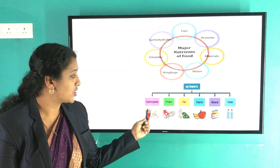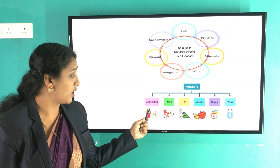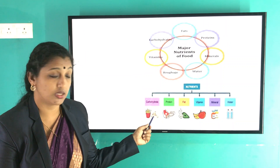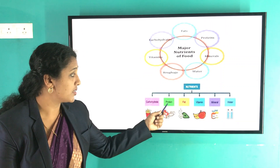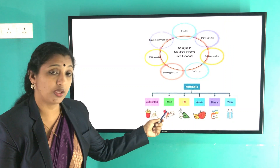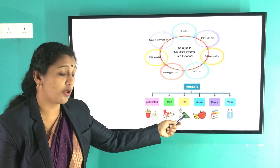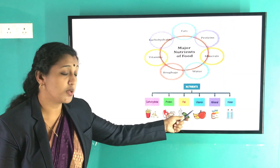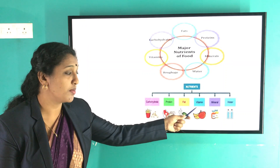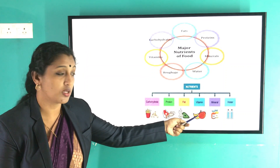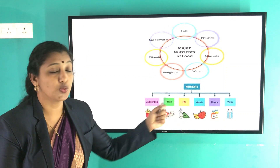We get these nutrients from different sources. Carbohydrates come from potatoes and different types of cereals. Proteins from meat and fish. Fats from oil and nuts. Vitamins from vegetables and fruits. Minerals from salt and some other seafoods. And of course, water.